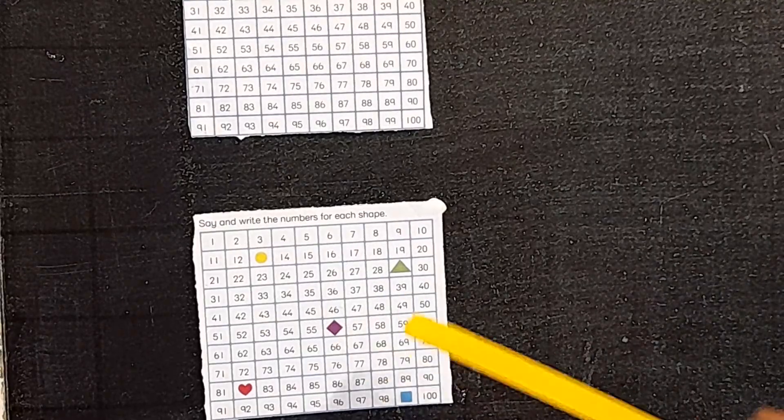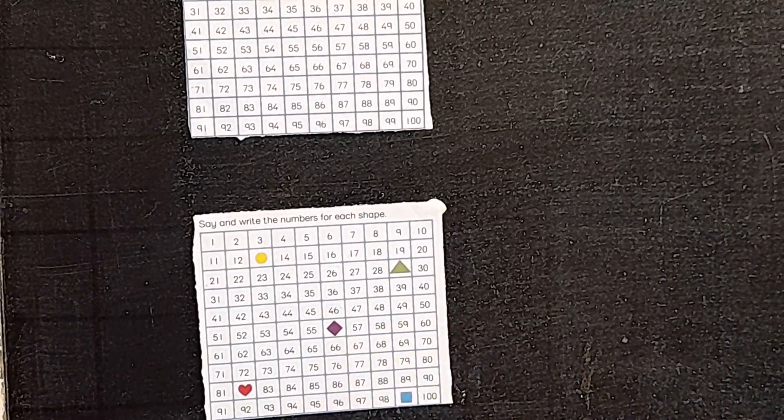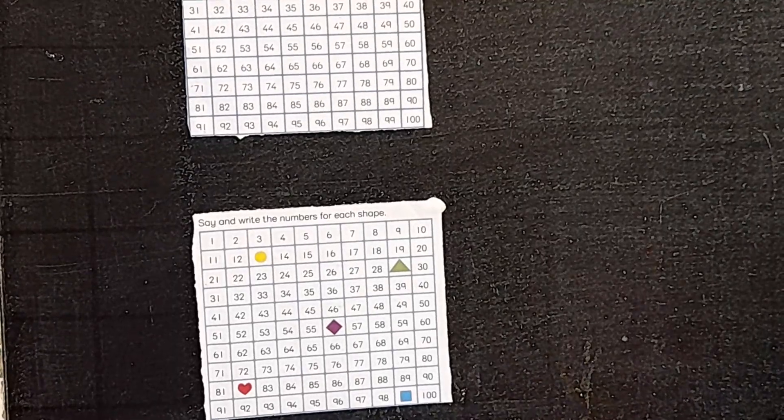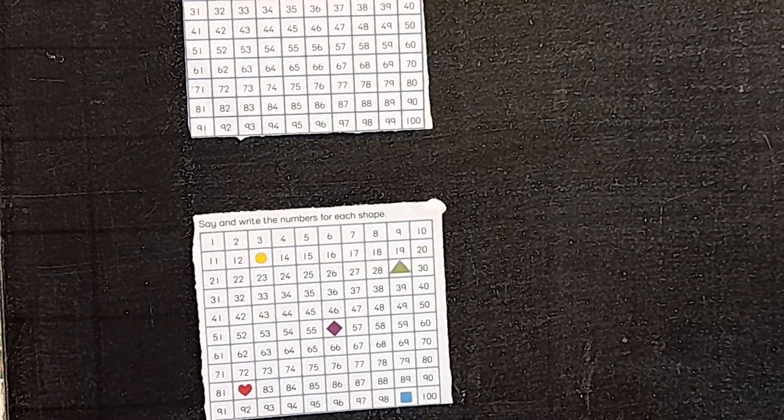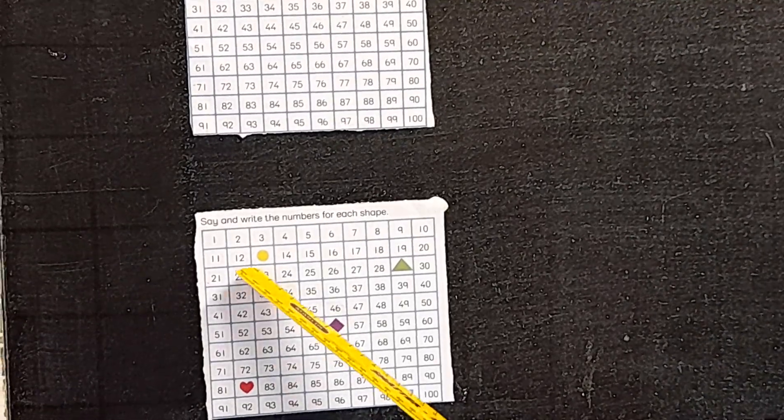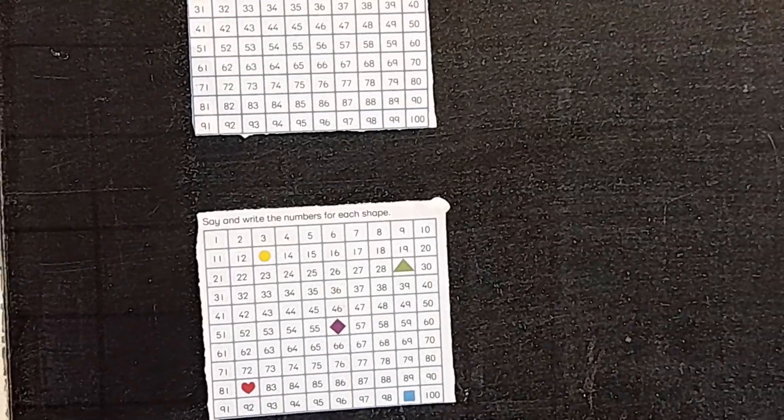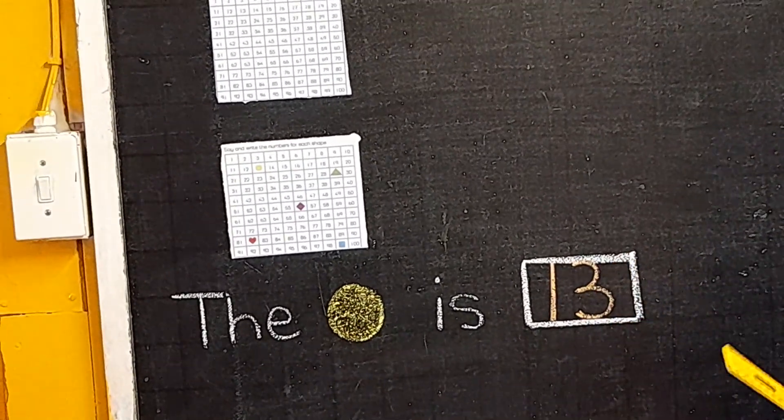You'll be able to complete the work the teacher will send you. Can we together do the first one? The circle is 13. Here I put the 13. Remember to write your numbers nicely and neatly so that the teacher can see.